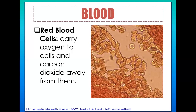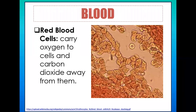Red blood cells make up the largest portion of the 45% cell elements in blood. This answers why blood is considered the river of life: red blood cells carry oxygen, and oxygen is one of the most important materials used by cells to carry out their cellular activities.